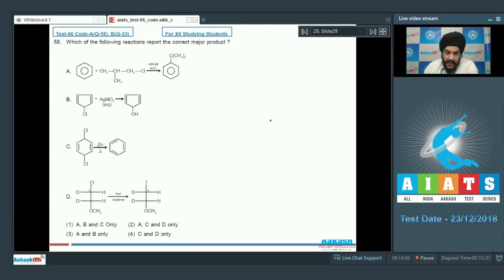Question number 58: which of the following reactions reports the correct major product? In option A, we have anhydrous AlCl3 which is going to extract the Cl minus, leading to the formation of a carbocation. That carbocation will undergo rearrangement leading to the formation of the tertiary butyl carbocation, which will substitute a hydrogen on the benzene ring to give this compound. In the second option, we have a cyclic halide reacting with AgNO3. The question mentions AgNO3 replaces Cl minus with OH minus, but this reaction is not going to happen.